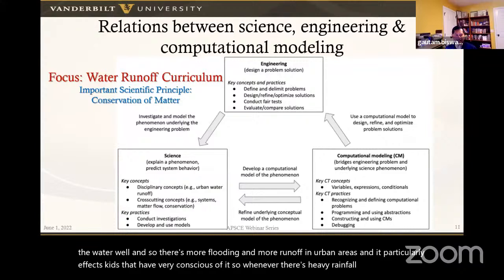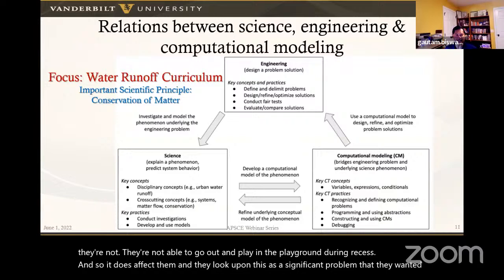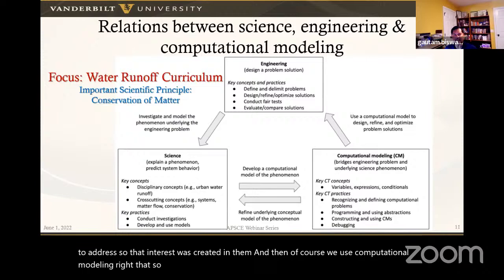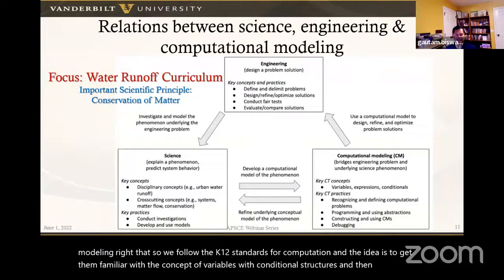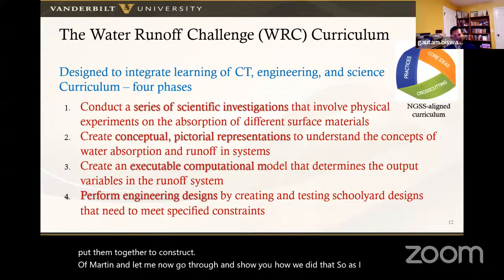Urban water runoff particularly affects kids — whenever there's heavy rainfall, they can't go out and play in the playground during recess. Students saw this as a significant problem they wanted to address. The NGSS standards we adopted involved scientific modeling and computational modeling as practices, with cross-cutting concepts ranging from understanding fundamental relations to engineering problem solving. Students went through a sequence starting with scientific investigations, building conceptual models, then executable computational models, and finally an engineering design process.